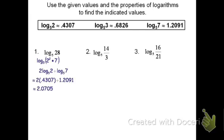Simplifying — multiplying 2 times 0.4307 and adding 1.2091 — I get that log base 5 of 28 is about 2.0705. When you do a problem like this, there's a good way to check your answer: take a calculator and raise 5 to the 2.0705 — it should come out very close to 28.